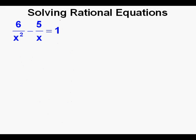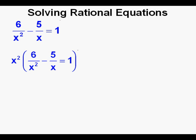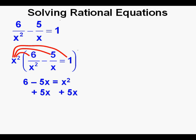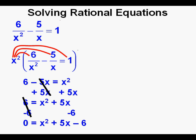Now we'll look at this rational equation: 6 over x squared minus 5 over x equals 1. This one has another level of complication — this time an x squared is in the denominator of one of the fractions. We're going to rationalize this equation by multiplying by x squared instead of x. Using the distributive property, we multiply x squared by every term inside the parentheses. That leaves us with 6 minus 5x equals x squared — a quadratic equation again. We'll solve by getting one side equal to 0, first adding 5x to both sides, then subtracting 6 from both sides. We're left with 0 equals x squared plus 5x minus 6.